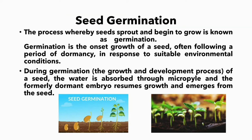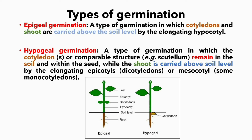The process where seeds sprout and begin to grow is known as germination. Germination is the onset of growth of a seed followed by a period of dormancy. During germination, that is during the growth and development process of the seed, water is absorbed through the micropyle, and formally the dormant embryo resumes its growth and emergence from the seed.